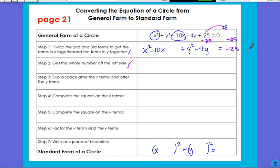So we did this. Put our X's together and our Y's together. Move the number out of the way. So that's the second step. The second step is move this out of the way. Subtract 25 from the side. Okay. So that's step two. All right. Step three. Skip a space after the X term and after the Y term. Well, I already did that, right? That's what this is saying. You can do that all in one step. Just leave a space for yourself. We kind of did that.